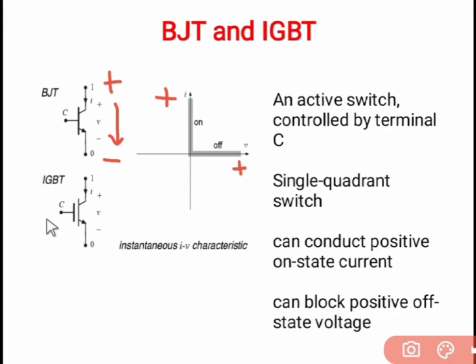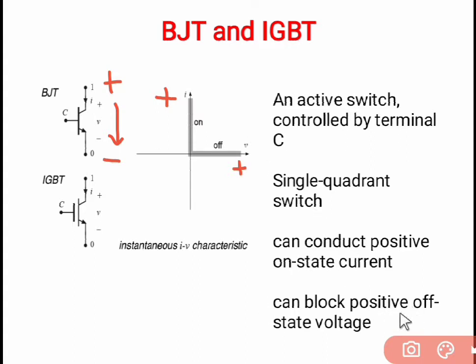Similarly, the IGBT turns on when we apply the gate signal and turns off when we remove it. It is also a single quadrant, first quadrant switch — it can conduct positive on-state current and block positive off-state voltage.